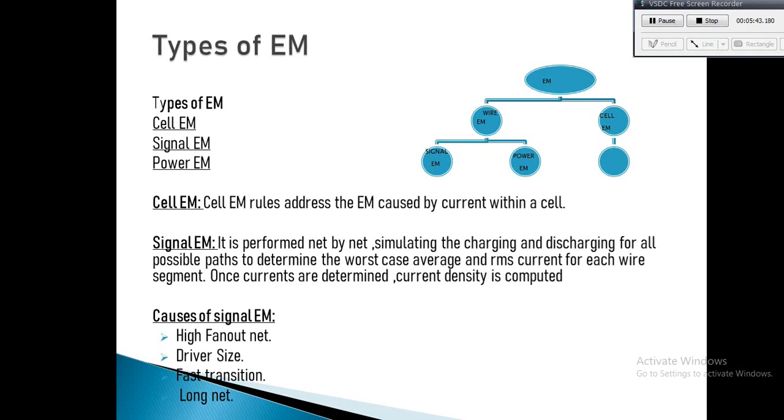Causes of signal EM include high fanout nets. When multiple fanouts switch together, high current is drawn from the driver. This high current generates considerable heat that may displace metal atoms, resulting in voids or hillocks. Driver size: a cell size of 16x or 12x unnecessarily induces large current in interconnects which heats up the wire, causing high IRMS and high delta T values.